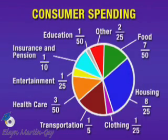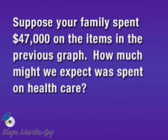Study the circle graph and look for the sector marked health care. Notice the fraction with health care is 3 over 50. Now let's suppose your family budget for the year is $47,000 on the items in this circle graph.